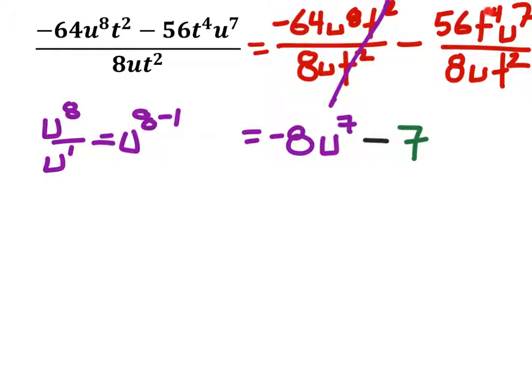Now, the order of the variables here is off a little bit, but that doesn't make a difference because it's multiplication, and we can move them around if we need to. So I can compare the u's directly. For example, I have u to the power of 7 divided by u, which would be to the power of 1. And that would give me u to the power of 7 minus 1, according to our exponent rules.